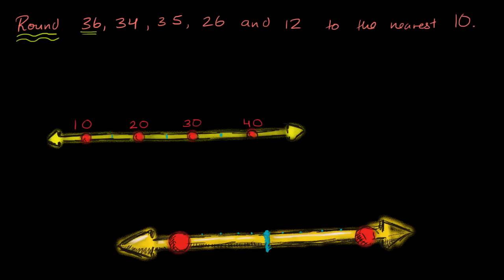Let's think about where these points would sit on this number line. This first number, 36 — where does it sit? Well, it's between 30 and 40. And this little blue mark is 35, which is halfway between.